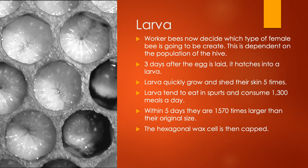Eggs hatch after three days and they turn into larva. Larva grow really quickly and shed their skin five times. Each day, larva consume 1,300 meals, so they are really, really hungry. Within five days, they grow 1,570 times larger than their original size. At this time, the worker bees actually cap the larva in their hexagonal wax cell so they can't escape.